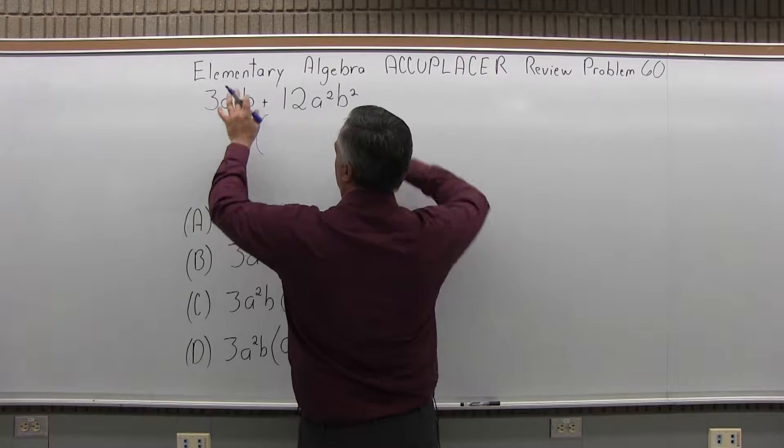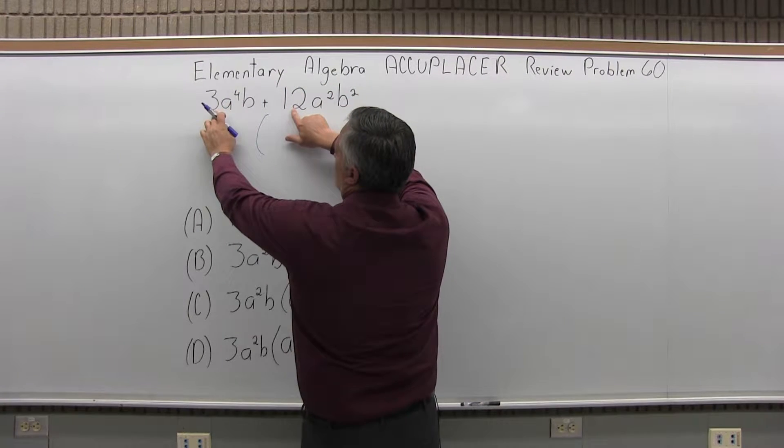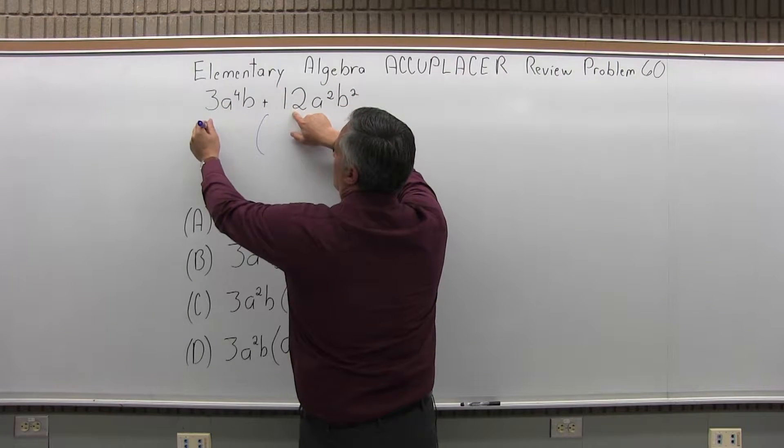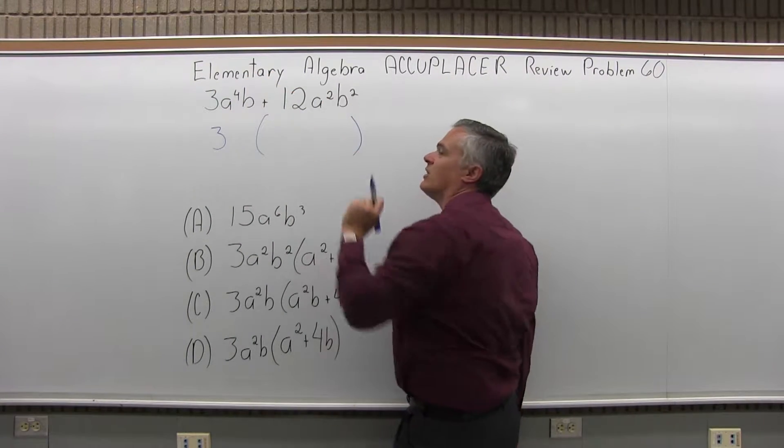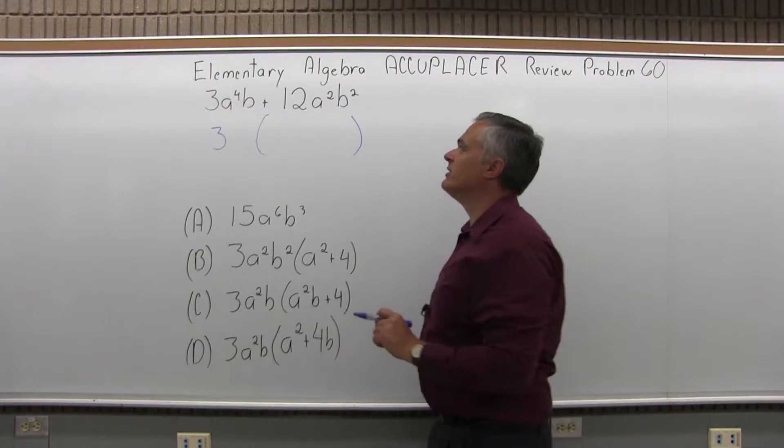Now look at just the numbers, forget the A's and B's, look at the three and the twelve. What comes out of both? Three can come out of both. Three goes into three evenly, three goes into twelve evenly. So now we're done with the numbers.